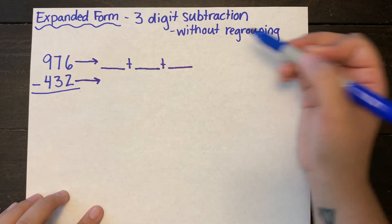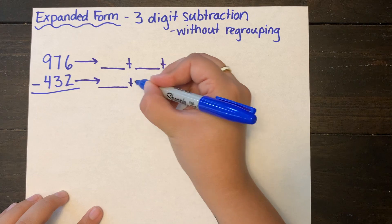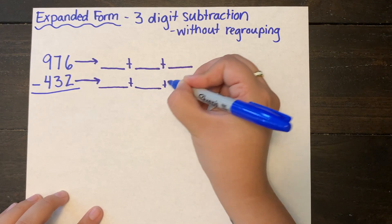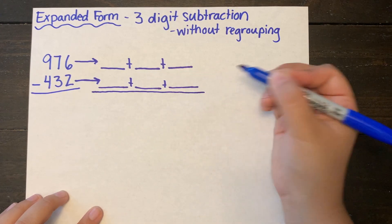I'm going to do that for both the subtrahend and the minuend. And I know that there are addition signs in between my placeholders. Remember when we expand a number out we're always using our addition symbols.